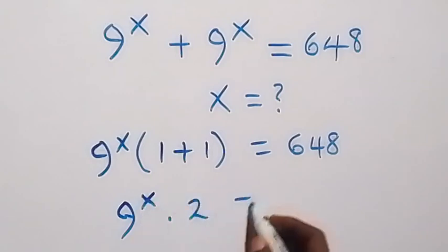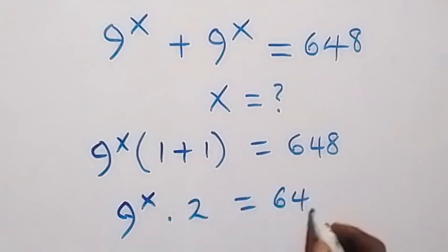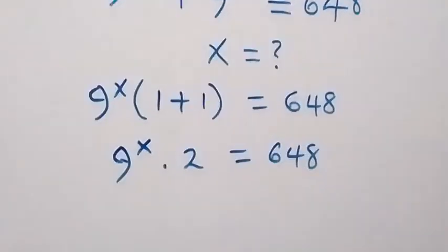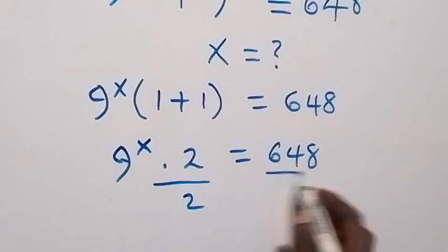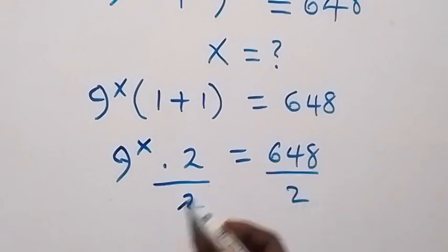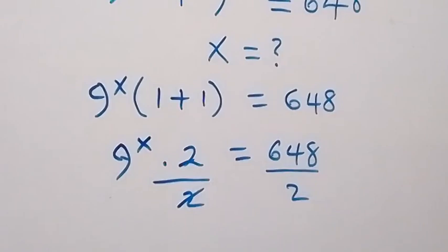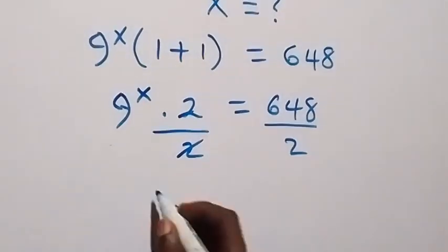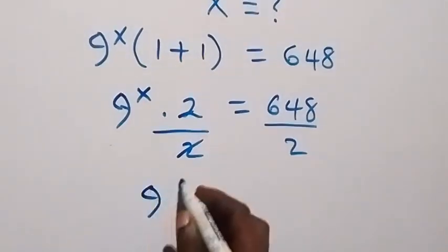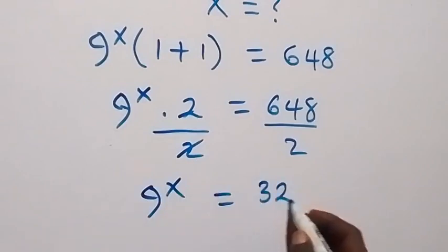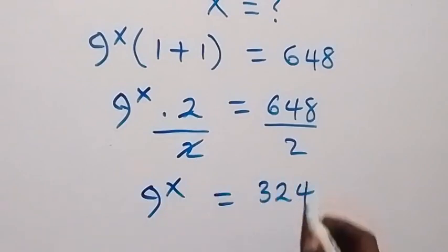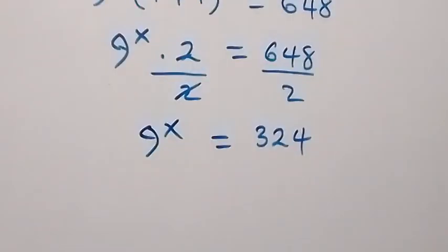x times 2 now equals 648. Next, we can divide both sides by 2 — we divide this side by 2 and also this side by 2 — to cancel out, and we are left with 9 raised to power x.